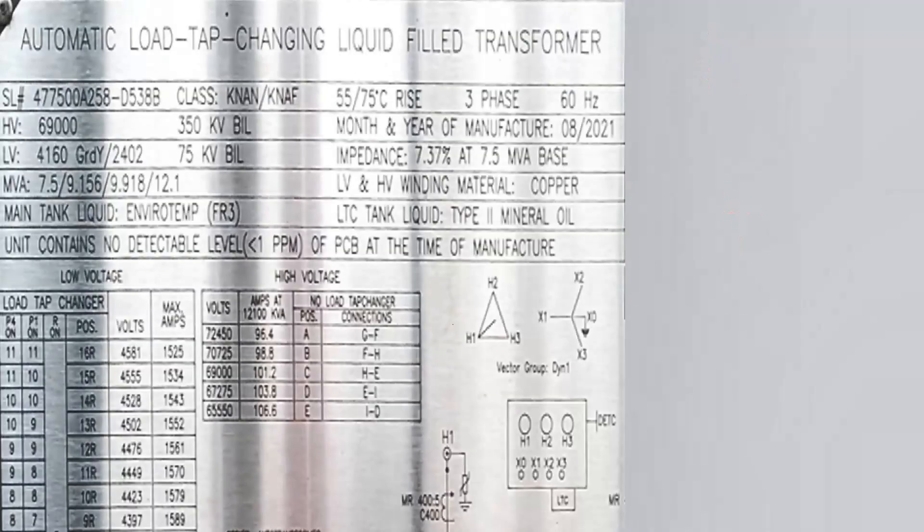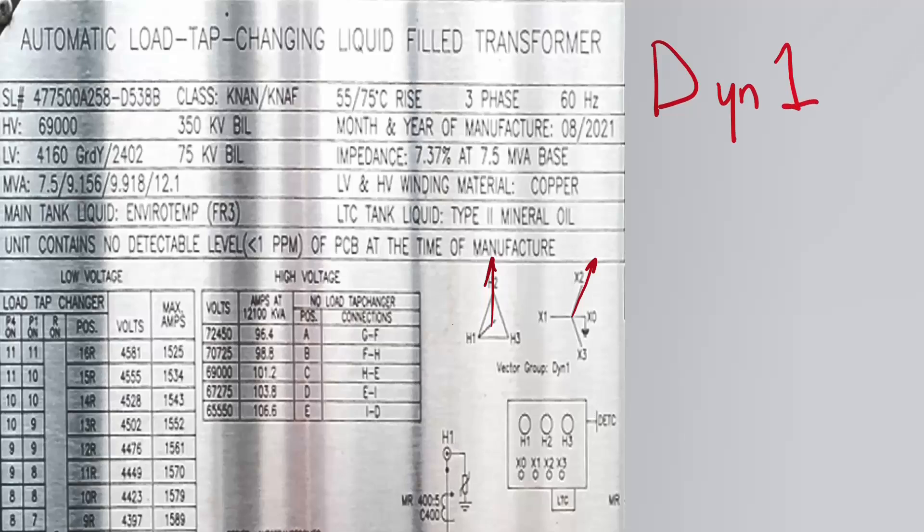Let's look at another one. And this one right here is one of the more common ones. And they even gave us our vector group, so we're just going to confirm that using this same logic. And here it's a delta, so this is a big D. And then we have a Y with an accessible neutral on the secondary. So remember, we don't need the clock for the primary. So this is going to be a Y,N. And then what's our clock shift? Well, if H2 is directly up, as you look at that, where is X2? Well, it's at 1 o'clock. So that puts this at a D,Y,N,1. And lo and behold, that's exactly what they got there.